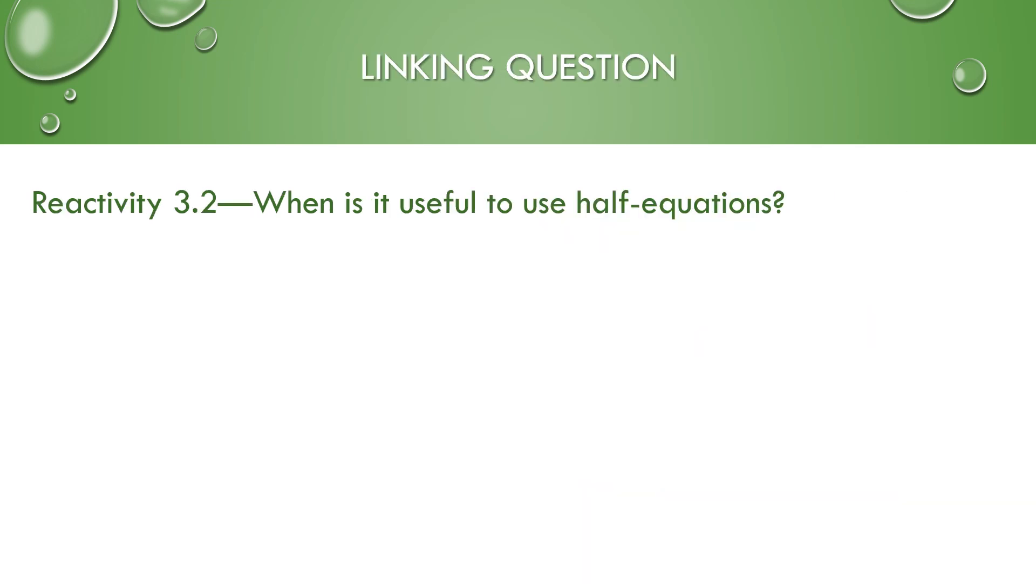Now this links to reactivity 3.2. When is it useful to use half equations? We can use half equations for redox reactions. Redox reactions always have a portion where it is losing electrons, which is oxidation, and a portion that is gaining electrons, which is reduction. So we can isolate the losing and the gaining into two separate half equations, or we can put them together to get your overall balanced chemical equation.